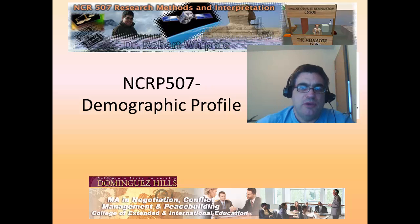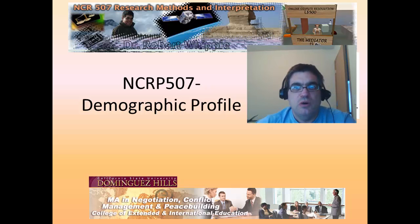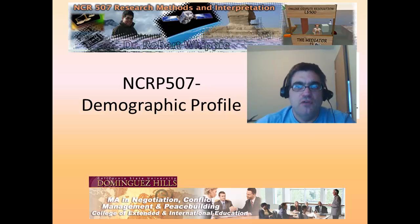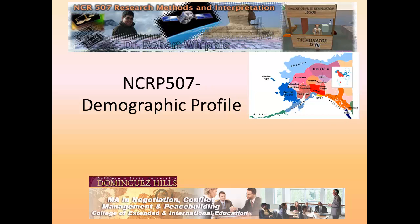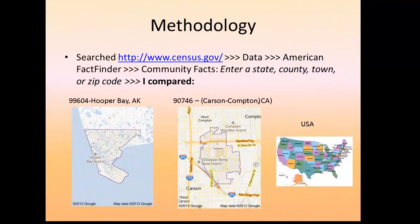Often when you're doing research, you're looking at things such as the race and ethnicity, the language, or the socioeconomic status of the population you're studying. For this example, I will do a simple comparison among Hooper Bay, Alaska, the Carson-Compton area, and the United States as a whole.